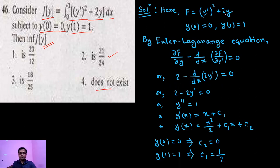Let's solve the problem. Here in the functional, the F is F equals to (y')² plus 2y.